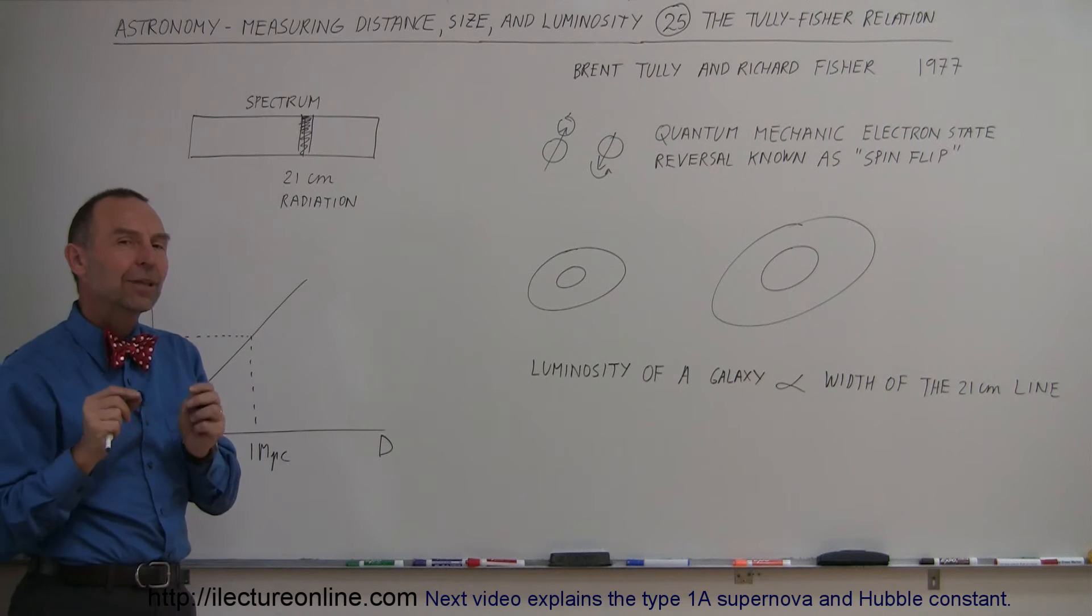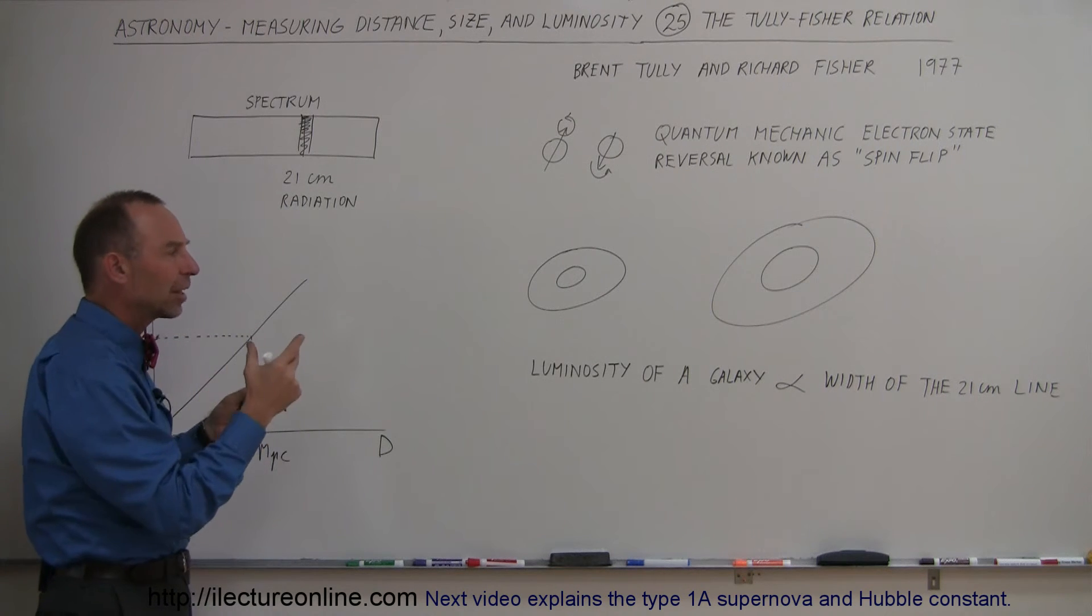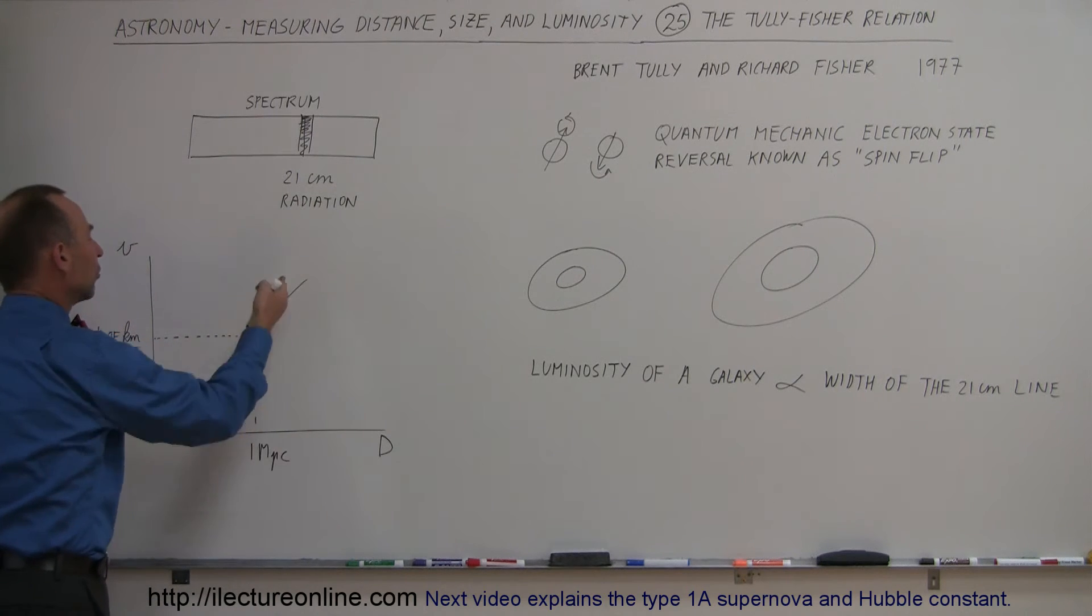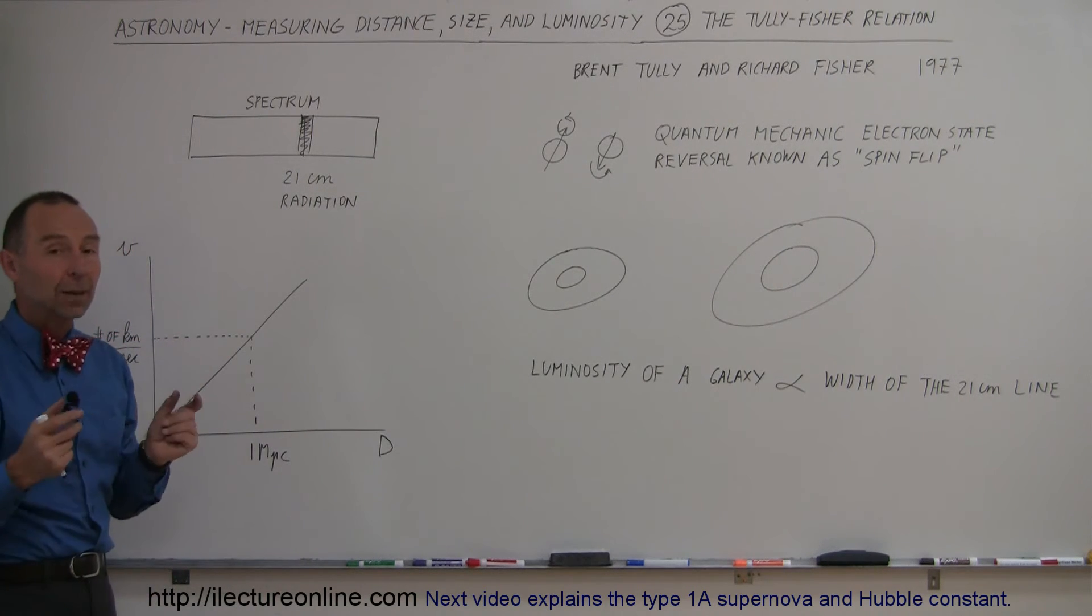Because of that, they were able to determine the distance to galaxies in an independent fashion. They utilized that to come up with a more accurate form of the Hubble constant. When they went through all their calculations,